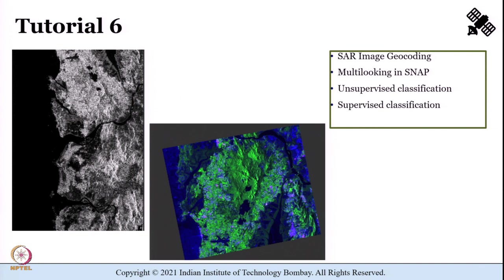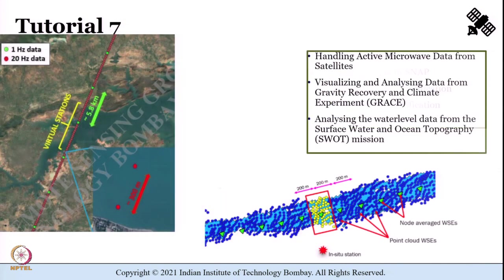Tutorial 6 shall deal with synthetic aperture radar geocoding and classification using supervised as well as unsupervised methods. Through Tutorial 7 we shall learn how to handle active microwave data from satellites — in particular, the focus shall be on visualizing and analyzing data from the Gravity Recovery and Climate Experiment (GRACE) and also water level data from satellite altimetry missions.